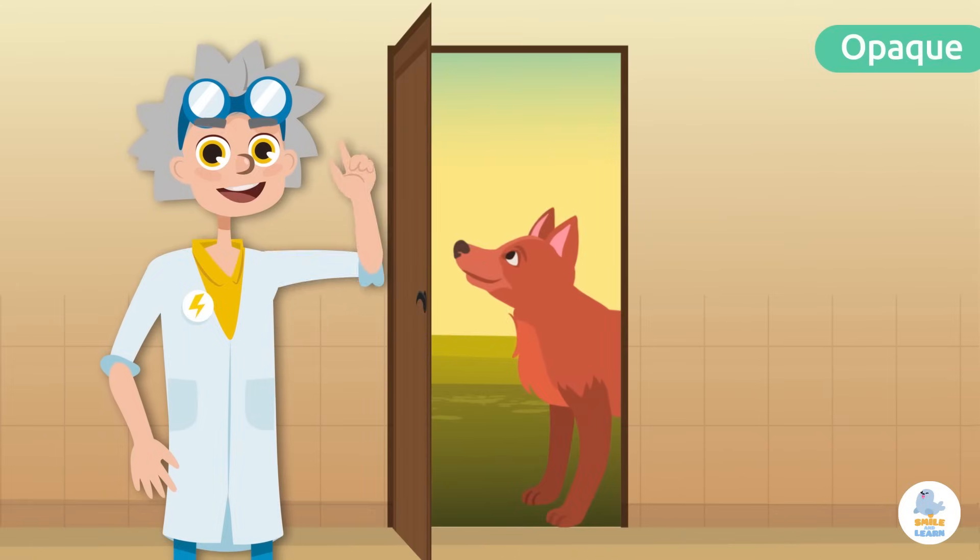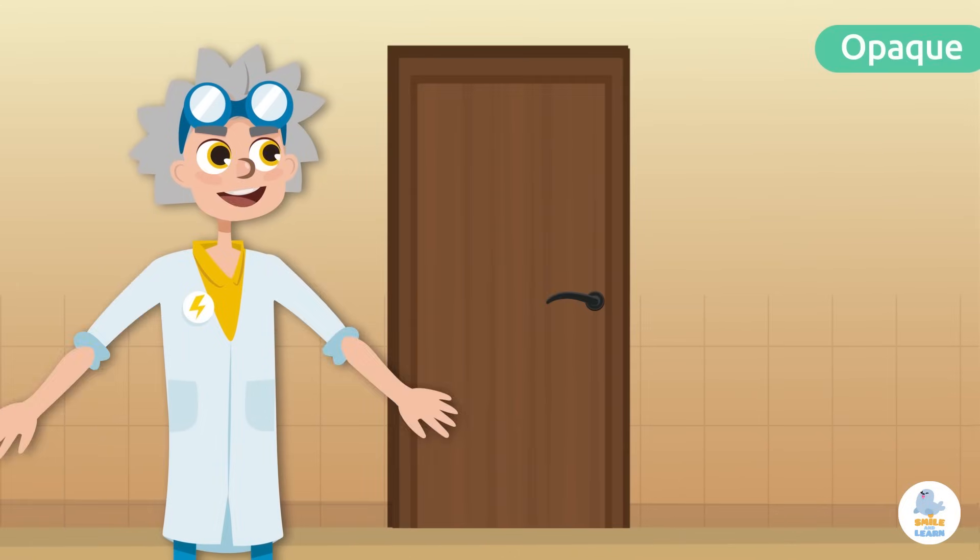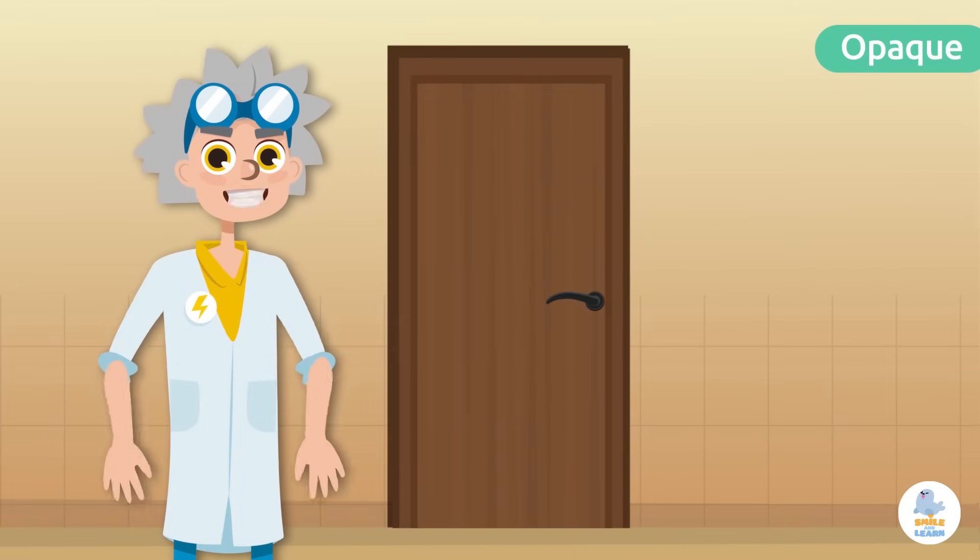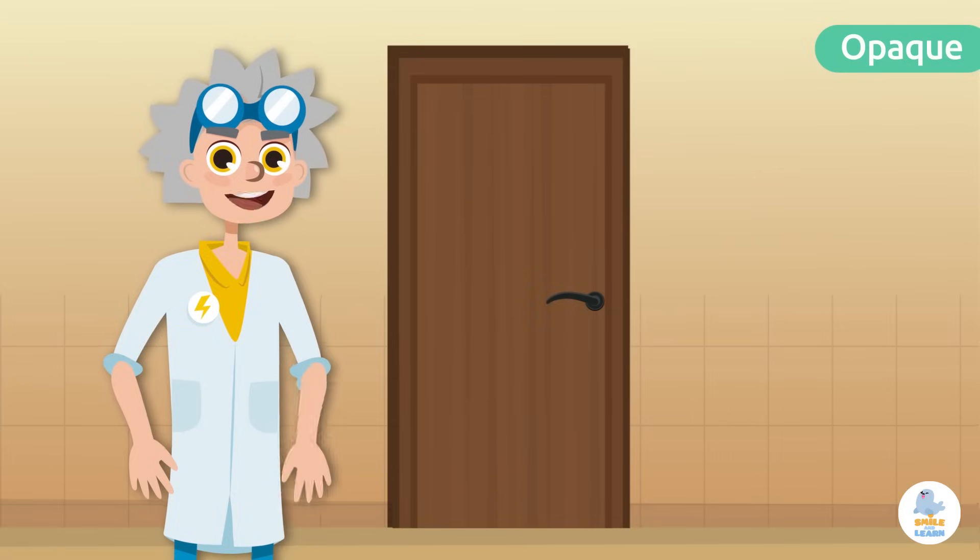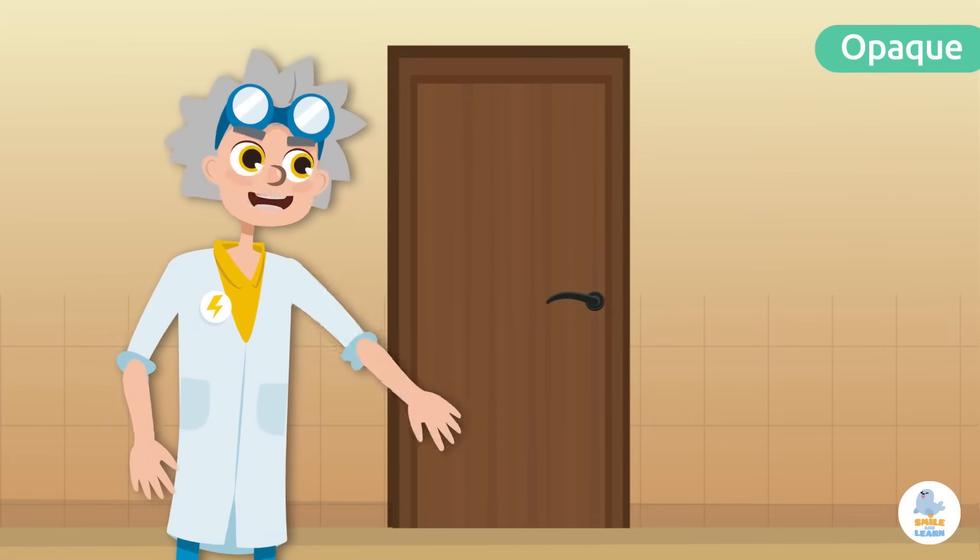Finally, opaque materials are those that do not allow light to pass through and therefore do not let you see what is behind them, such as a wooden door.